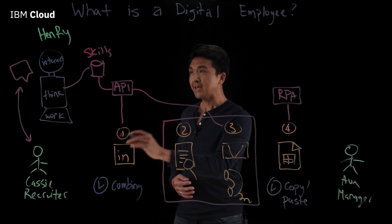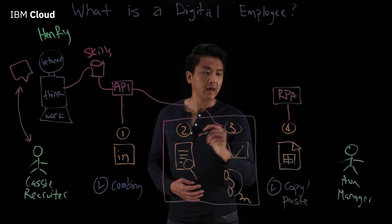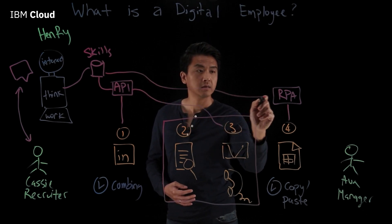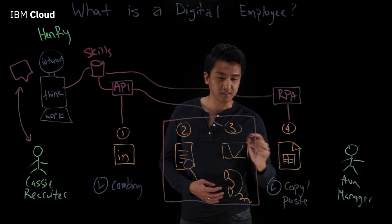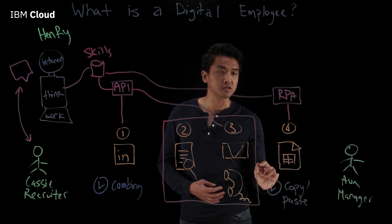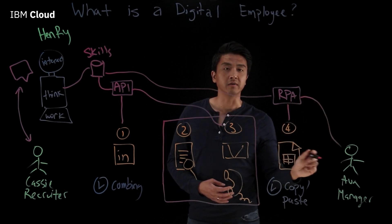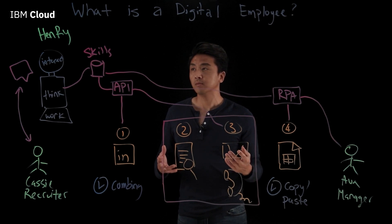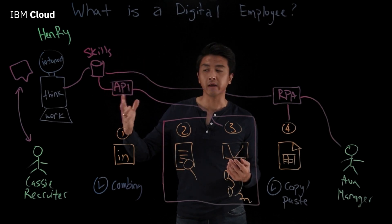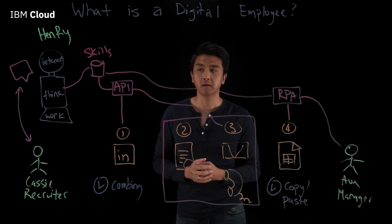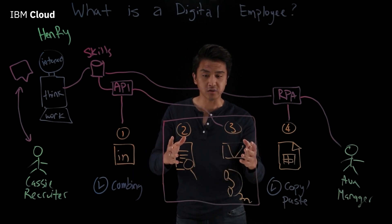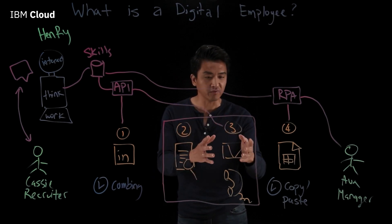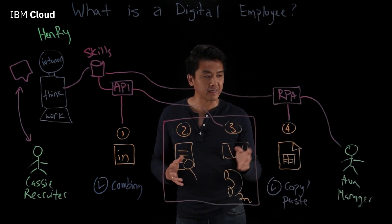Later on in the process, Cassie can ask Henry to take the shortlist of candidates and compile them in the spreadsheet. Henry will interpret that and match it to its spreadsheet skill. It will copy each row of the shortlist into the spreadsheet and can even signal to Ava when that list is ready for her to review. This was a very simple example, but it shows how a digital employee can help Cassie save hours of manual work. Now Cassie can focus more of her attention on higher-value work, reviewing resumes and thoughtfully preparing for interviews to come up with a better list of candidates for Ava.